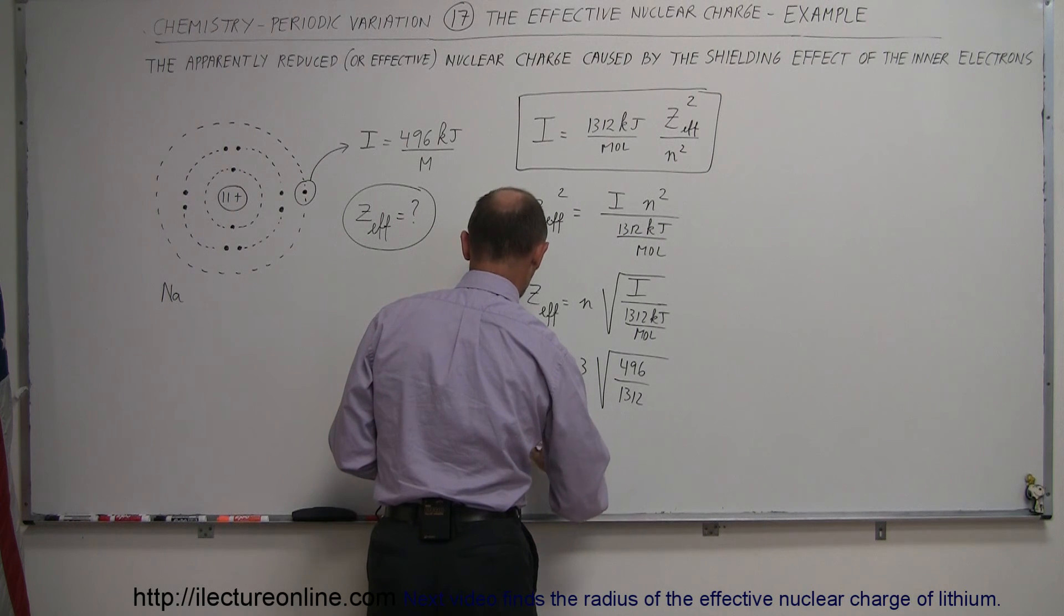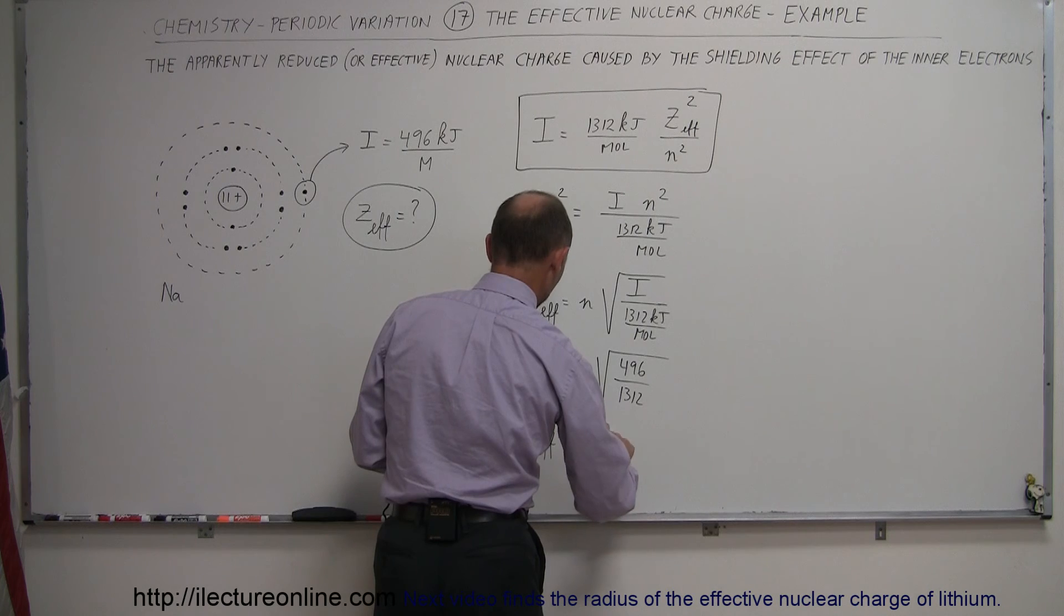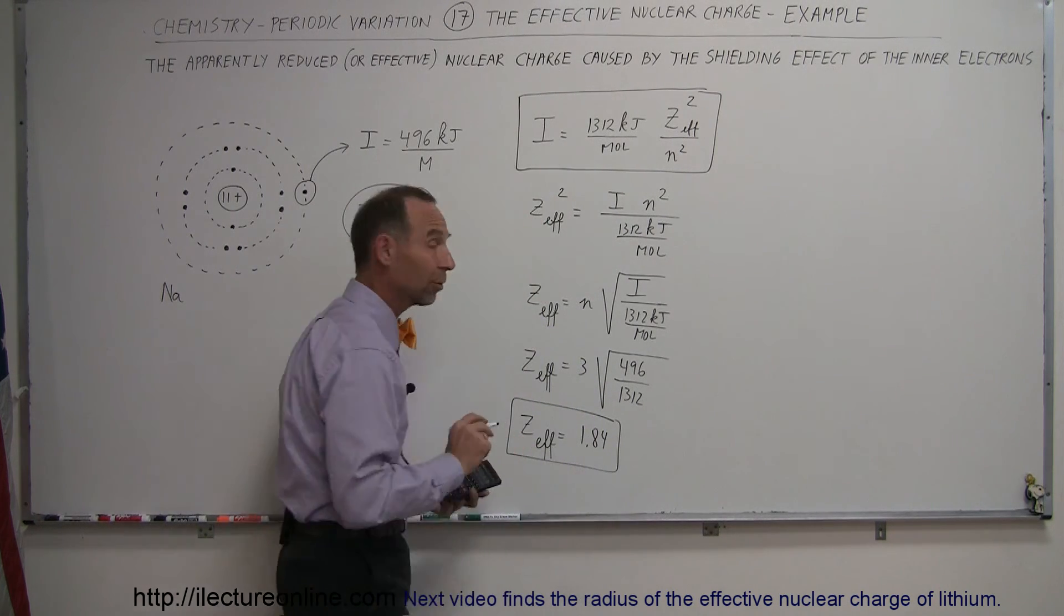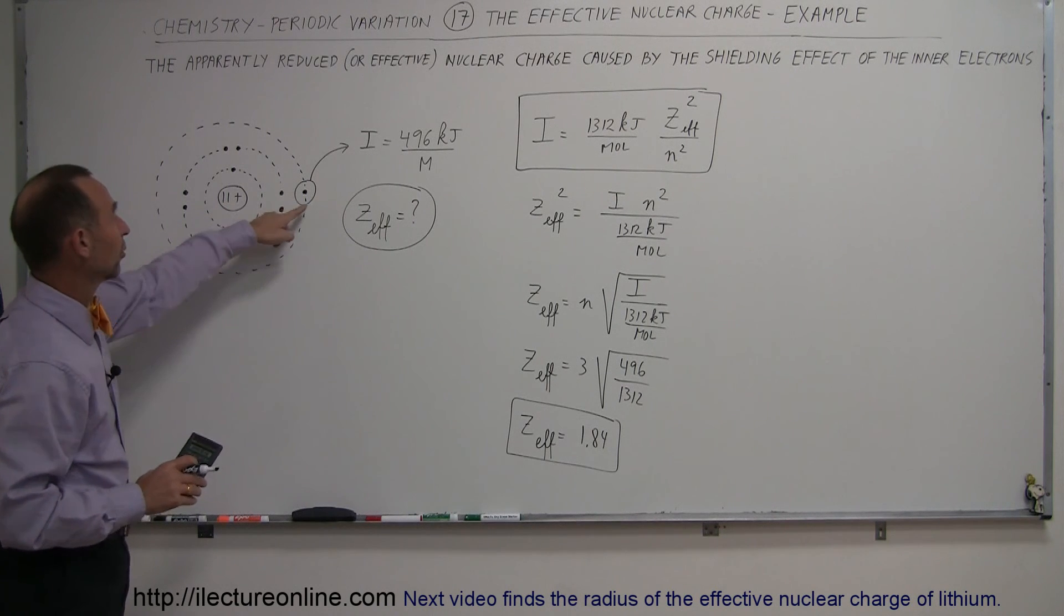About 1.84. So Z-effective is equal to 1.84 positive charges. That's quite a difference. There's actually 11 positive charges there, but to this electron, due to the presence of these other 10 electrons,